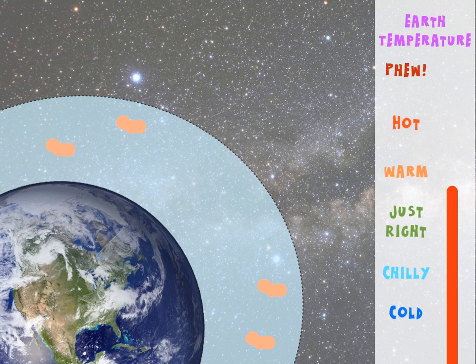As you can see, in our atmosphere, we've got some greenhouse gases. They're the little orange blobs. Our Earth's temperature is warm, just about right. So let's step through the process again.